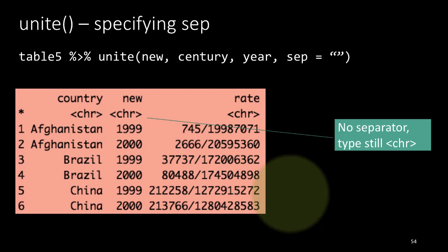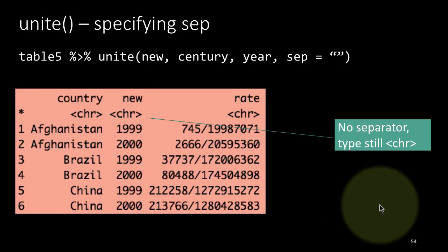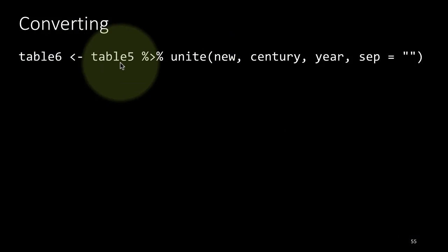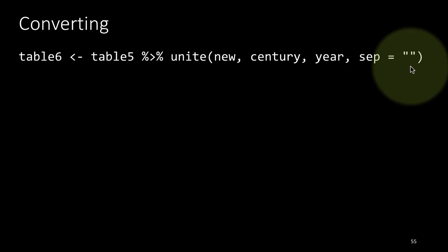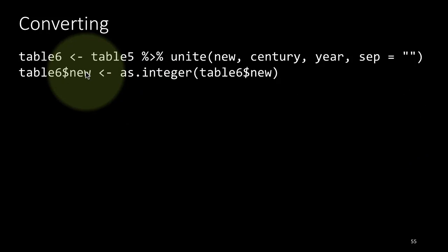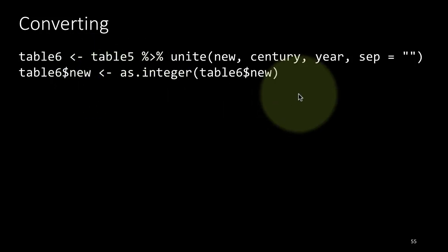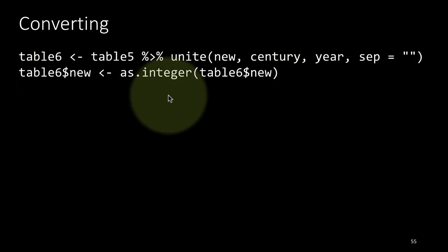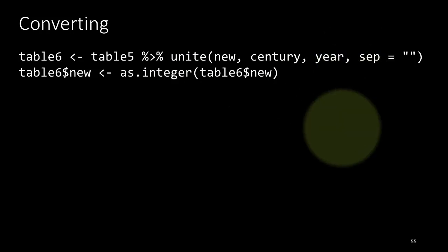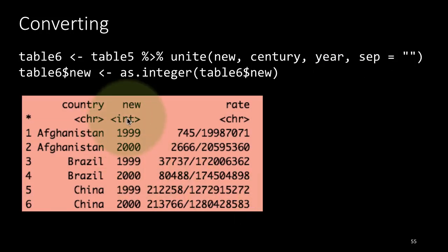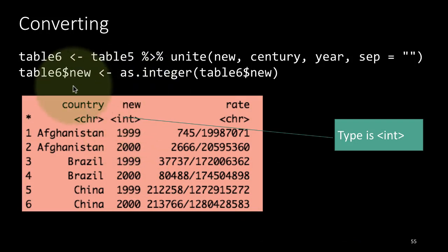Unlike separate, unite doesn't offer a convert = TRUE option, so there's no direct way to do the converting. If we want to convert, we do it separately: table6 <- table5 %>% unite(new, century, year, sep = ''), then explicitly convert with as.integer(table6$new). After these operations, the new column is a proper integer column because of that second line where we explicitly converted it.